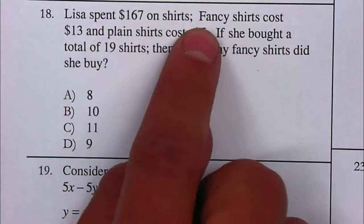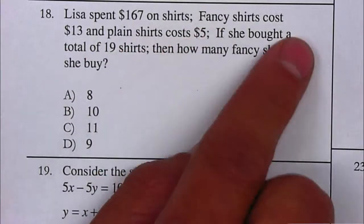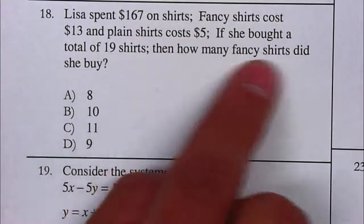Lisa spent $167 on shirts. Fancy shirts cost $13 and plain shirts cost $5. If she bought a total of 19 shirts, then how many fancy shirts did she buy?